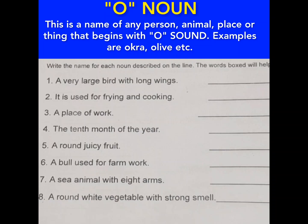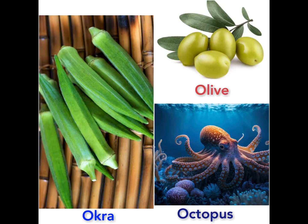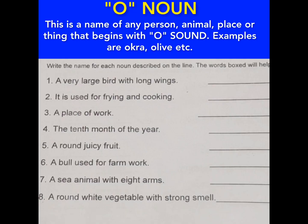Today we shall be looking at 'O' nouns. An 'O' noun is the name of any person, animal, place, or thing that begins with the 'O' sound. Examples are okra, olive, and so on. So, let's quickly attempt the following questions by writing the name for each noun described.